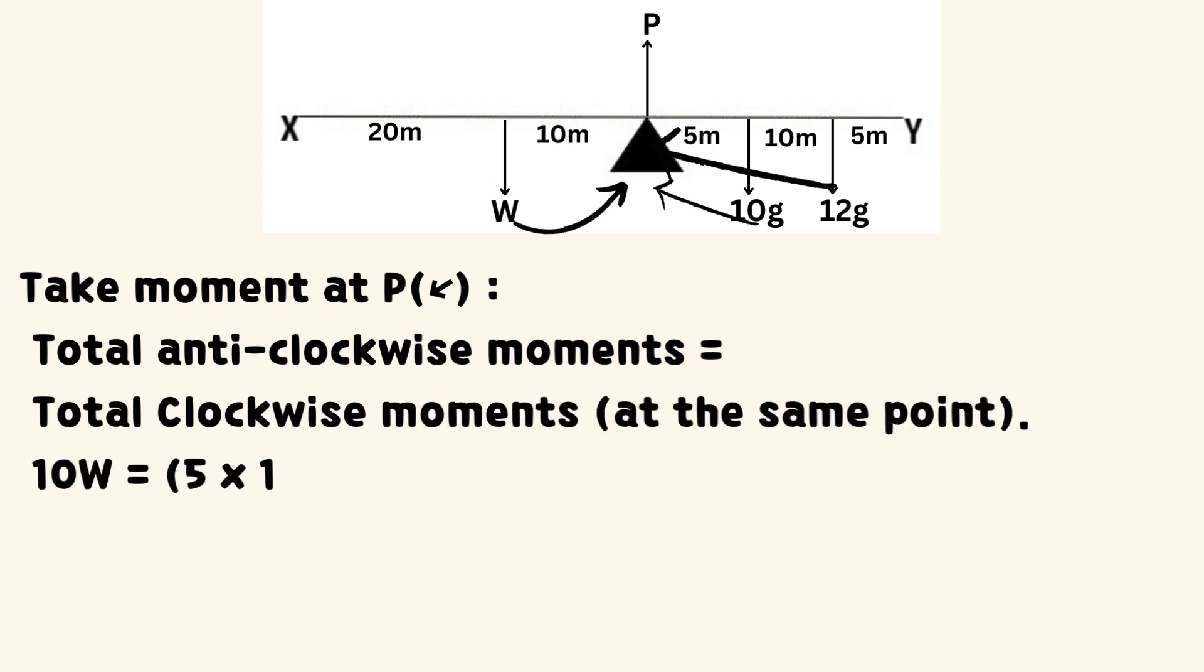Hence, 10 times W equals the sum of 500 and 1800, which equals 2300.